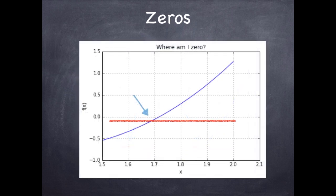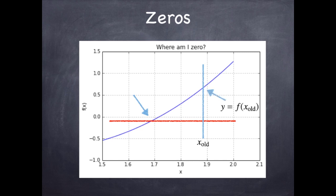Let's zoom in a little bit and focus on the zero on the right. Let's think about how we can write an algorithm to find that zero. The notion is, if we start at a point that's not too far away, we can evaluate the function at that point. We call that point x_old — the old value of x — that is an estimate of where the zero is. We evaluate the function there and get a value of y, which is the function result evaluated at x_old. This is called Newton's method — one way to find zeros.